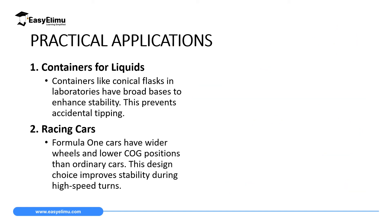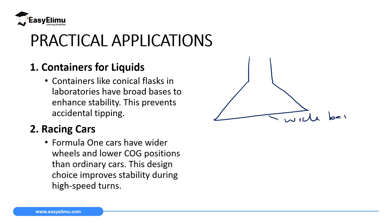The applications of stability are based on the two factors we discussed — base area and position of the center of gravity. The first application is containers for liquids, especially conical flasks used in the laboratory. These are conical in shape with a very wide base area, so their center of gravity is as low as possible. If displaced slightly, the weight of the flask still remains within its base.